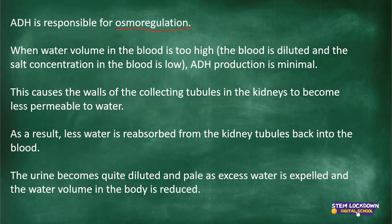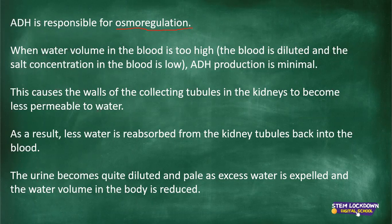When ADH production is minimal, this causes the walls of the collecting tubules in the kidneys to become less permeable to water. Why are the walls less permeable to water? Because water volume in the blood is too high — the blood is diluted and salt concentration is low. Like the example of making juice with too much water and too little juice. When you have too much water, ADH production is minimal, so less water will be reabsorbed from the kidney tubules back into the blood. The urine then becomes quite diluted and pale as excess water is expelled and the water volume in the body is reduced.